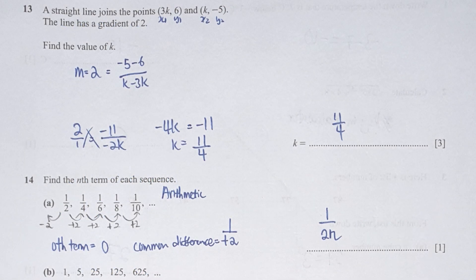For question 13, based on the coordinates given, run the calculation of y2 minus y1 over x2 minus x1 equals 2. Cross multiply it and you will get k equals 11 over 4.